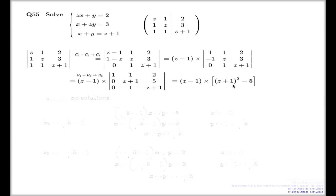Let's trace the logic again. We started from the assumption that we have a triple of numbers X, Y, Z which solves the system. Then, changing our approach to Z as a parameter, we said it means Z is such a parameter which makes the augmented matrix solvable. The next step was that a solvable matrix means the determinant is zero, and here are the possibilities for Z.